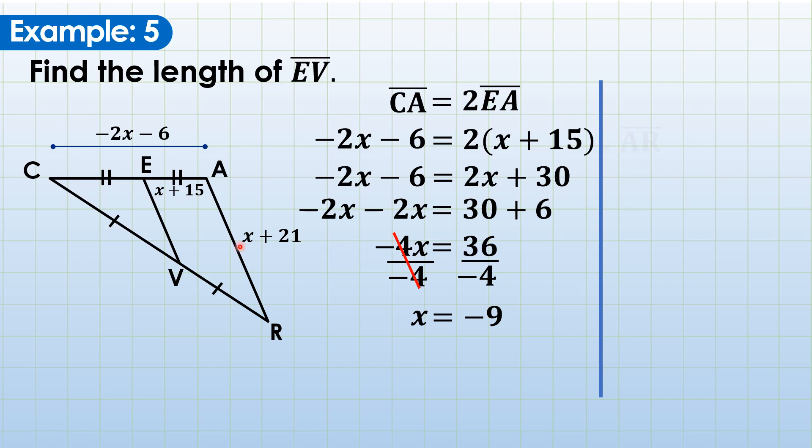Let's continue. We can now use this one to determine the exact measure or the actual measure of AR. So AR is equal to x plus 21. And substitution, x is negative 9 plus 21. And then simplify, negative 9 plus 21 is 12. We now know the actual measure of AR.